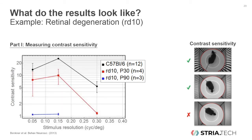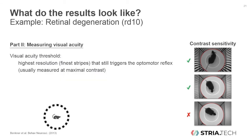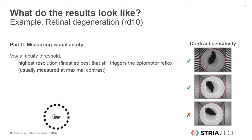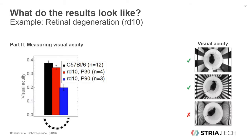This line graph shows the same data again — the contrast sensitivity of wild-type mice in black and young and old RD10 animals in red and blue, respectively, measured at these three different resolutions. Next, let's have a look at measuring visual acuity. The visual acuity threshold is defined as the highest resolution that still triggers the optomotor reflex, usually measured at maximal contrast.